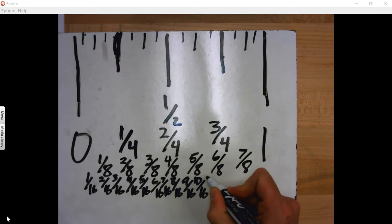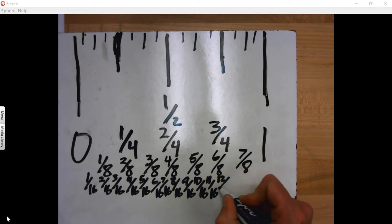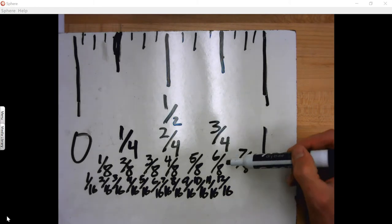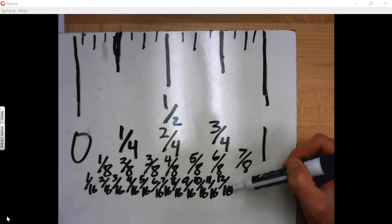And eleven-sixteenths. I'm going to just keep going until it beats into your head. And then twelve-sixteenths. So three-fourths is equal to six-eighths, which is equal to twelve-sixteenths.